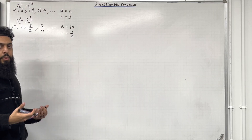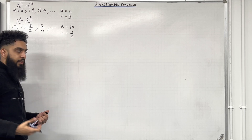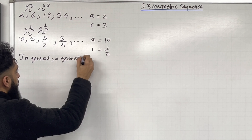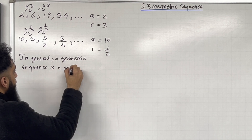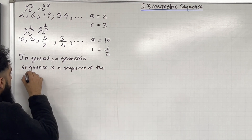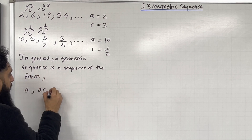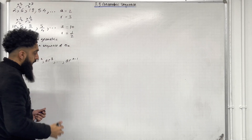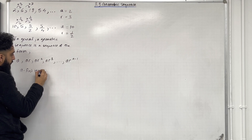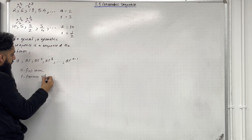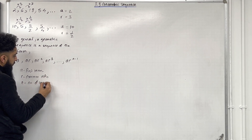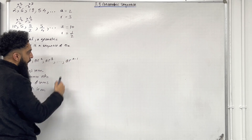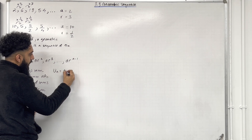These two are examples of geometric sequences. In general, a geometric sequence is a sequence of the form A, AR, AR², AR³, ..., AR^(N−1). A is called the first term, R is called the common ratio, N is the number of terms, and U_N is the nth term. For a geometric sequence, the nth term is U_N = AR^(N−1).